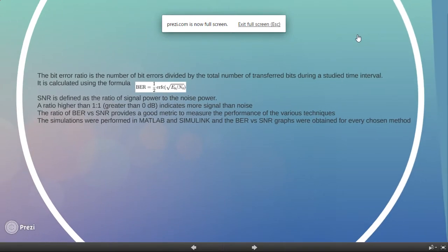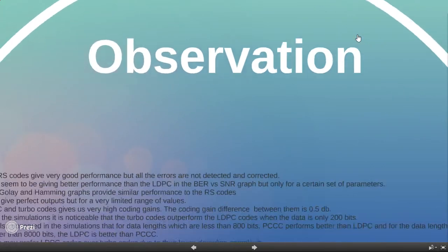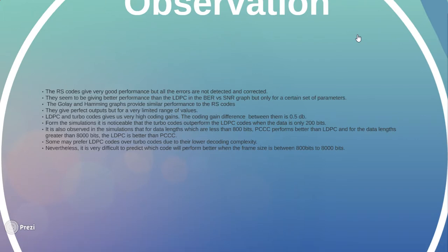Now from all this we can go to our observations. We have observed that the RS codes give very good performance but all the errors are not detected and corrected. They seem to be giving better performance than the LDPC in the BER versus SNR graph but only for a certain set of parameters.